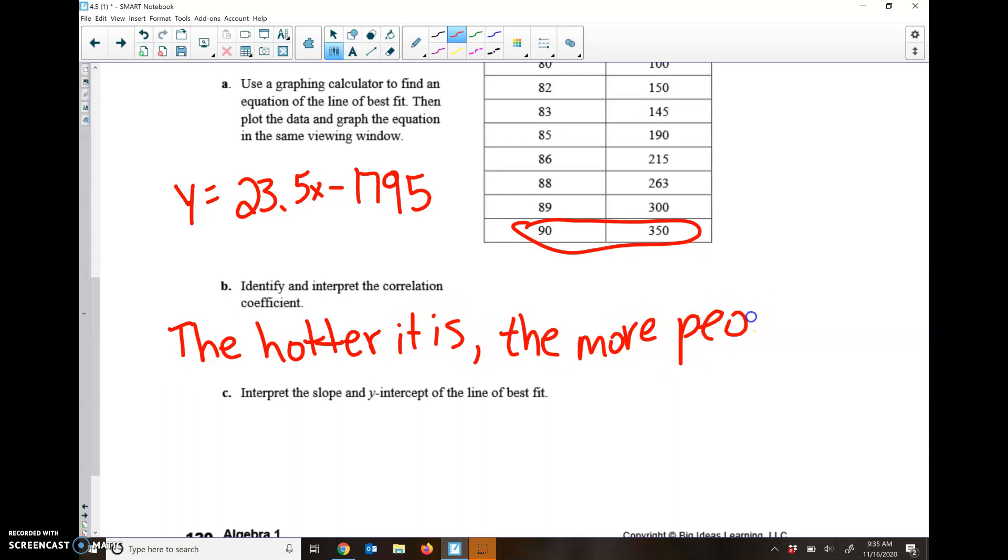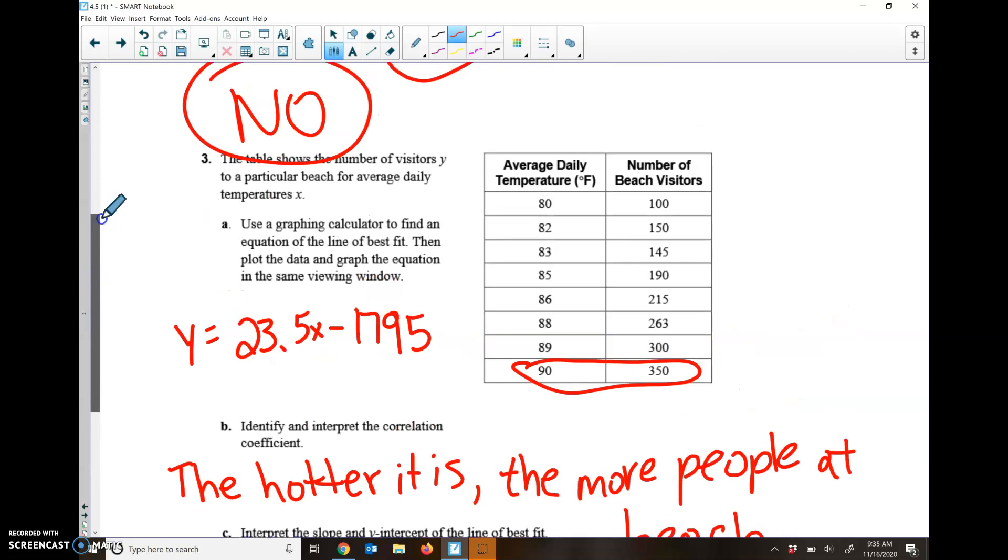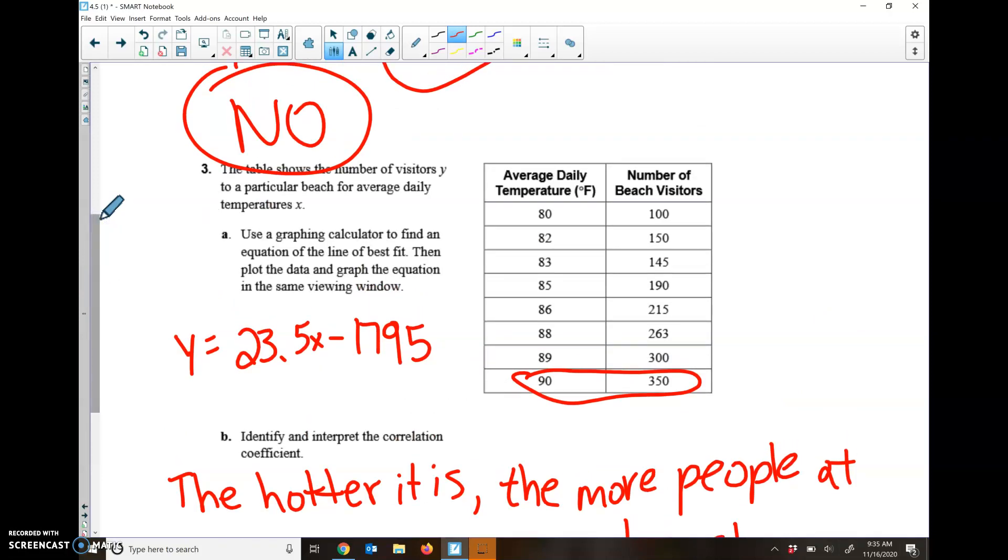Again, great real life example of how we would use this, especially if you have your own business. You're going to want to see how many people are going to be coming to your store or coming to wherever. There's probably some kind of data you can use to figure that out with temperature or even days of the week, where Mondays this many people come, Tuesdays this many people come, and kind of figure out the correlation there of when are going to be your busiest days and when are going to be your not busy days. Hope that helped you.